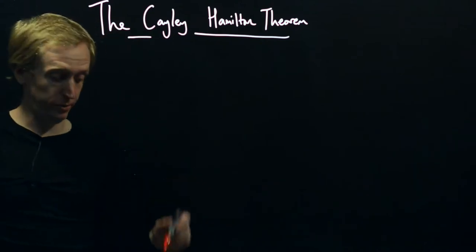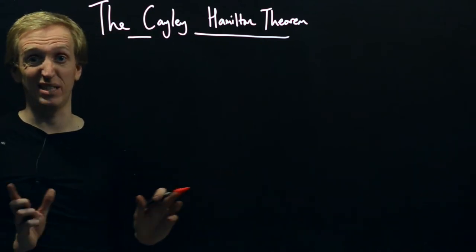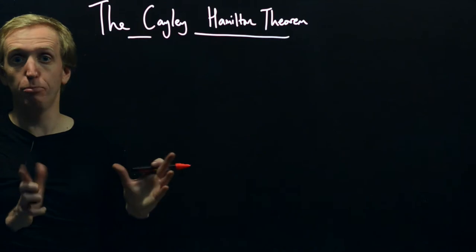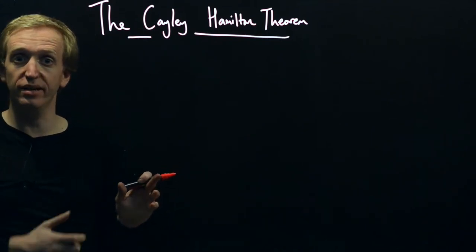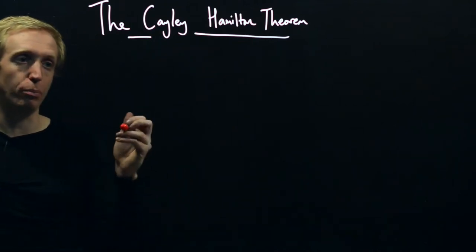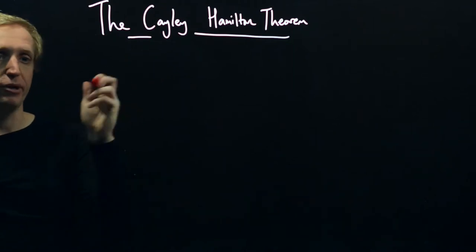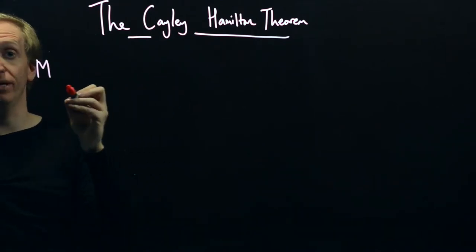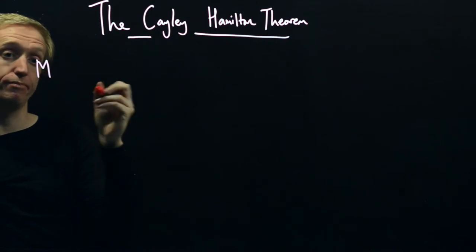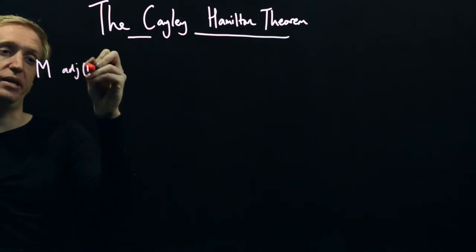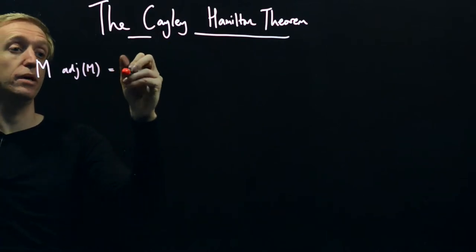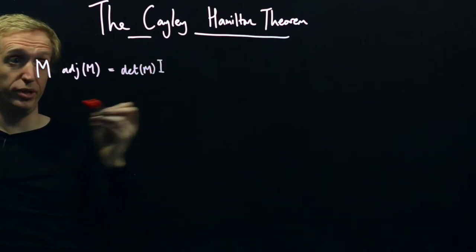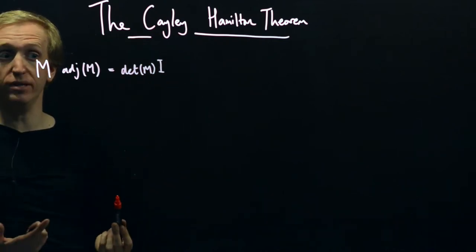So how are we going to do things? We're going to derive the Cayley-Hamilton theorem essentially using a whole ton of algebra, based on a simple formula involving the determinant of a matrix and its adjugate matrix. The formula says that some square matrix M multiplied by its adjugate matrix is equal to the determinant of M multiplied by the identity matrix.